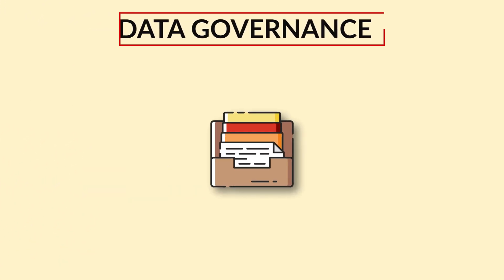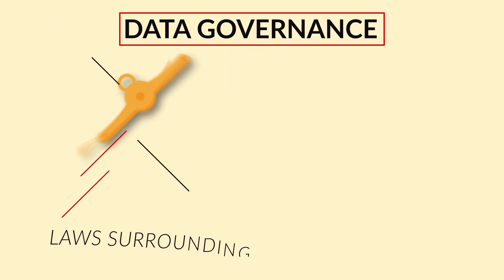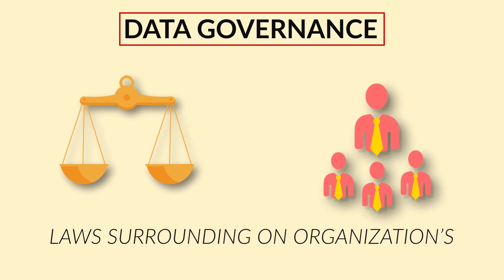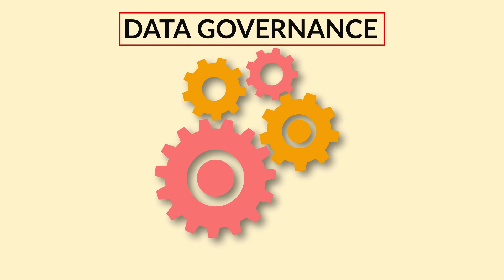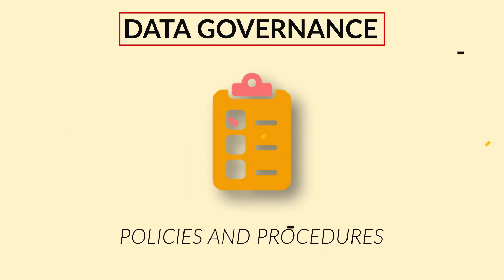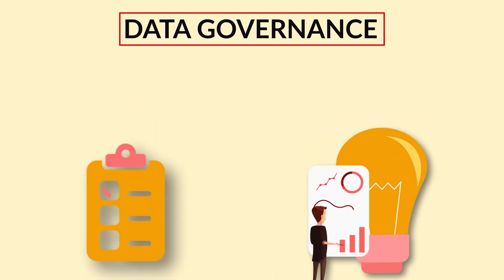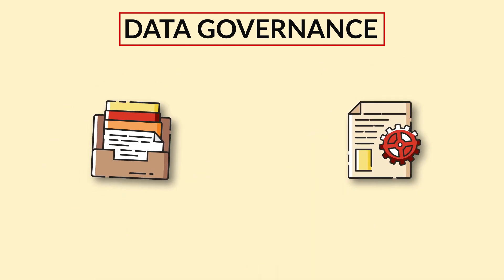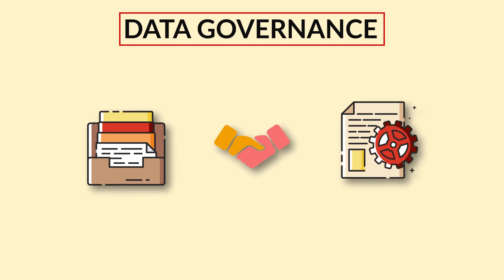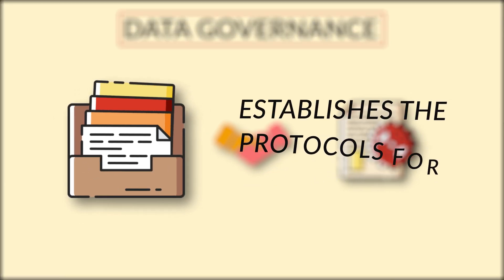Data Governance. The responsibility of data governance is to set the laws surrounding an organization's state of information. In other words, data governance develops clear outlines of policies and procedures for managing the data. Data governance and data stewardship work in tandem, as data governance establishes the protocols for the data.